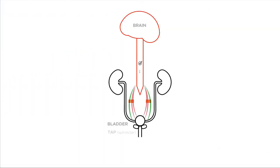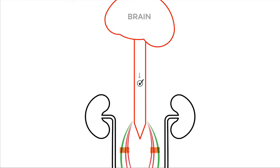With a lower motor neuron lesion, or flaccid bladder, the brain has difficulty coordinating the filling and emptying of the bladder.